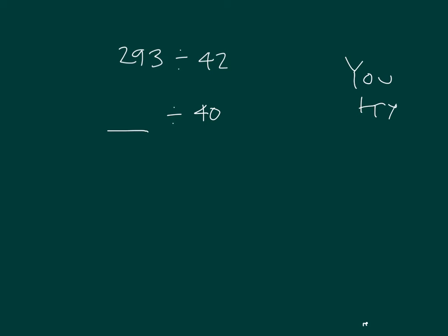40, 80, 120, 160, 200, 240, 280, 320. She chose 280. 280 divided by 40. She'll be thinking of 28 divided by 4, which is 7. So 280 divided by 40 is 7.